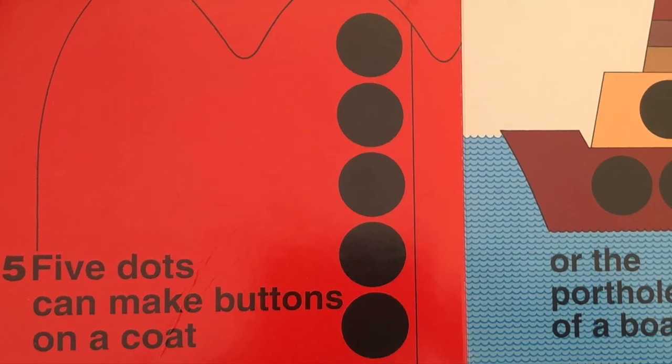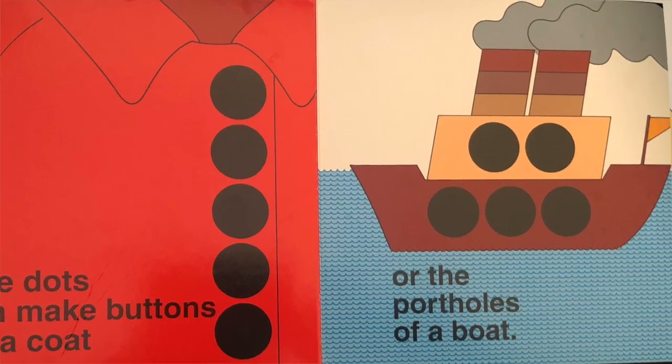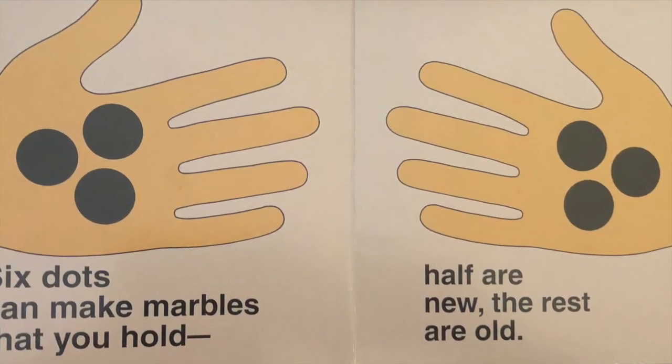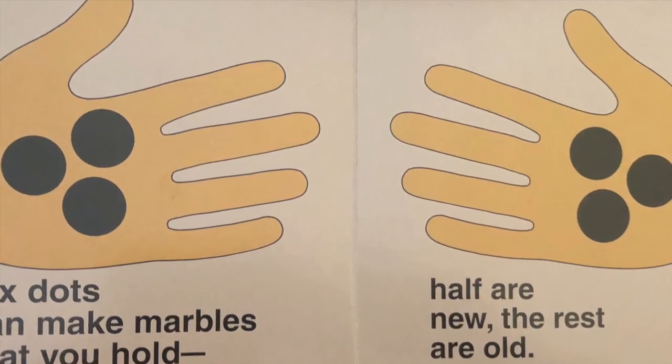Five dots can make buttons on a coat or the portholes of a boat. Six dots can make marbles that you hold. Half are new, the rest are old.